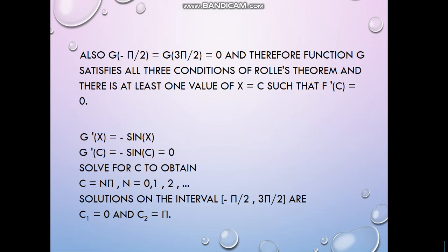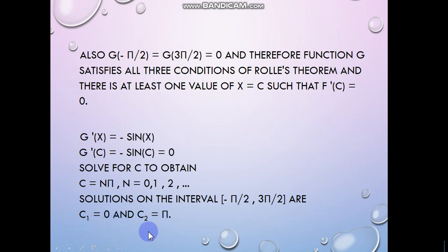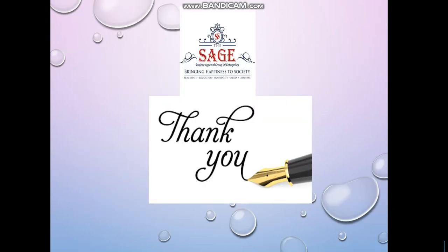All conditions give sin(c) = 0, so c = nπ where n = 0, 1, 2, 3, and so on, but the interval is fixed as (−π/2, 3π/2). In this interval, only two values satisfy this: c = 0 and c = π. At both these points the derivative is zero. So Rolle's theorem is verified for this function.